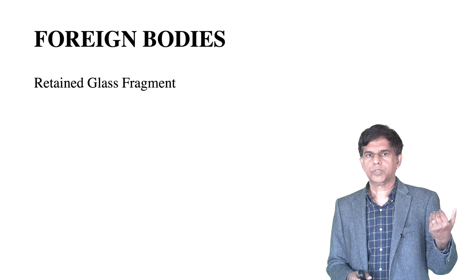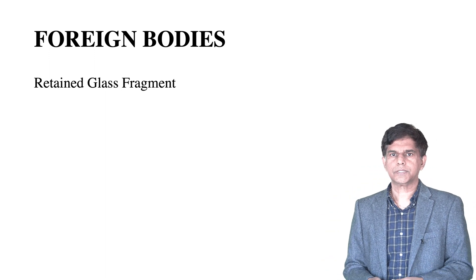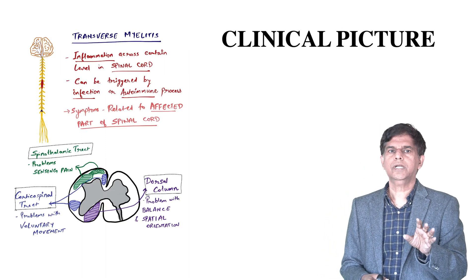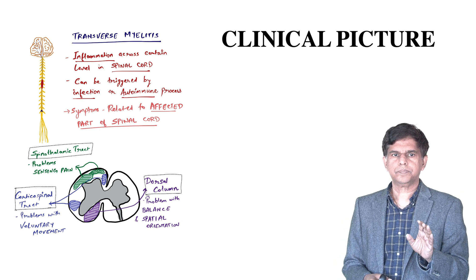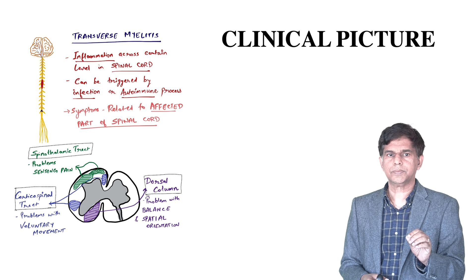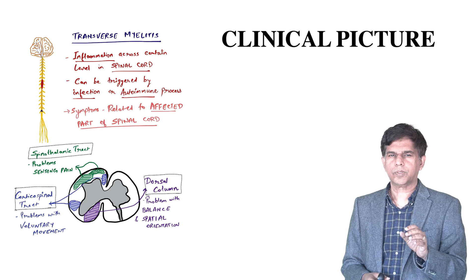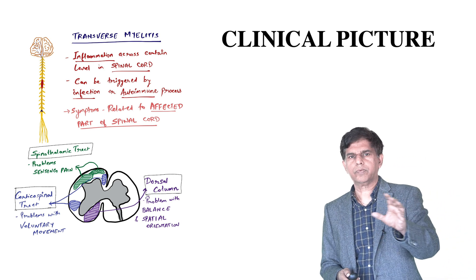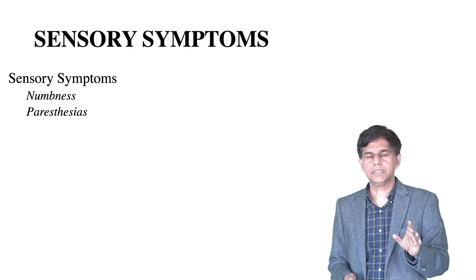There are also reports of foreign bodies such as retained glass fragments contributing to this disease. Looking at the clinical picture: you can affect the spinothalamic tract causing sensory symptoms, the corticospinal tract affecting voluntary movement, and the dorsal column causing problems with balance and spatial orientation.